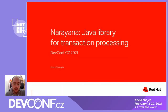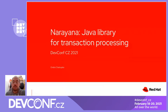This talk is named Narayana, a Java library for transaction processing. I am Ondra Chaloupka. I work for Red Hat, specifically in the Narayana team working with this library.